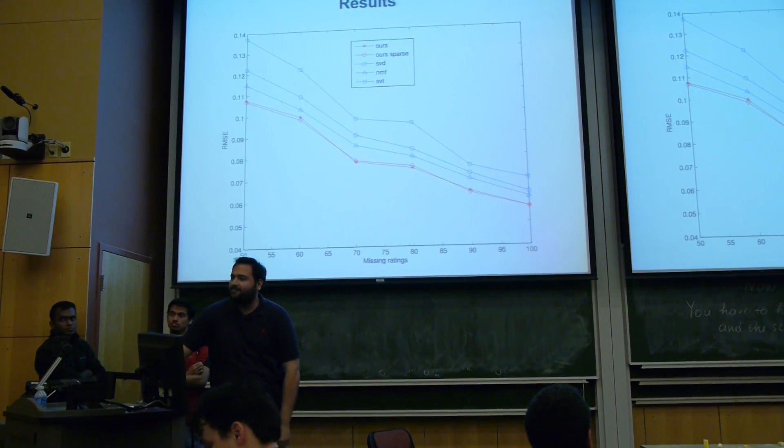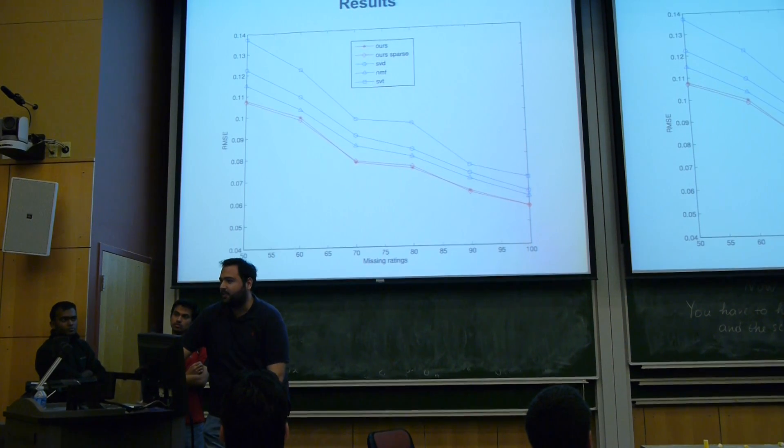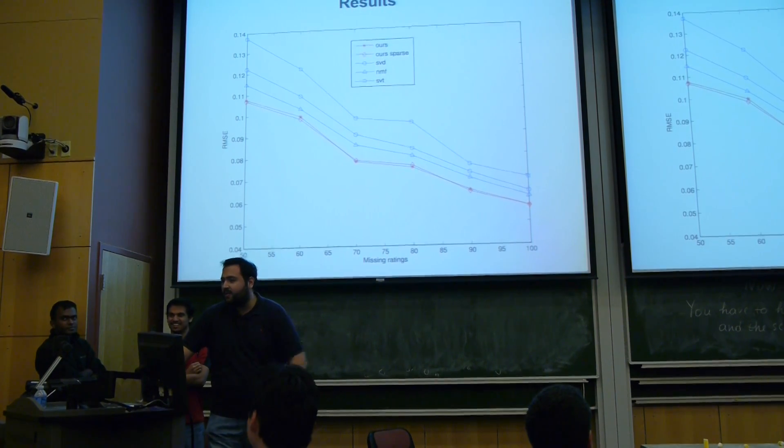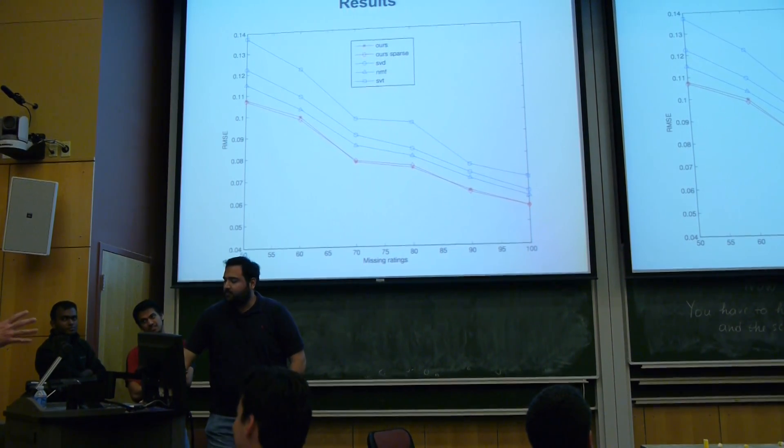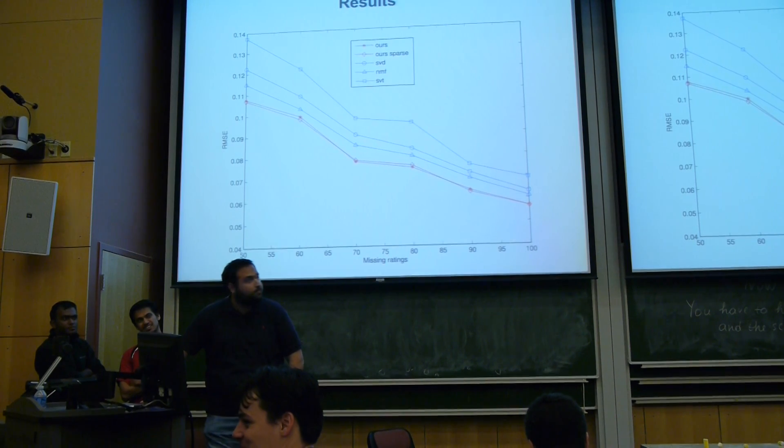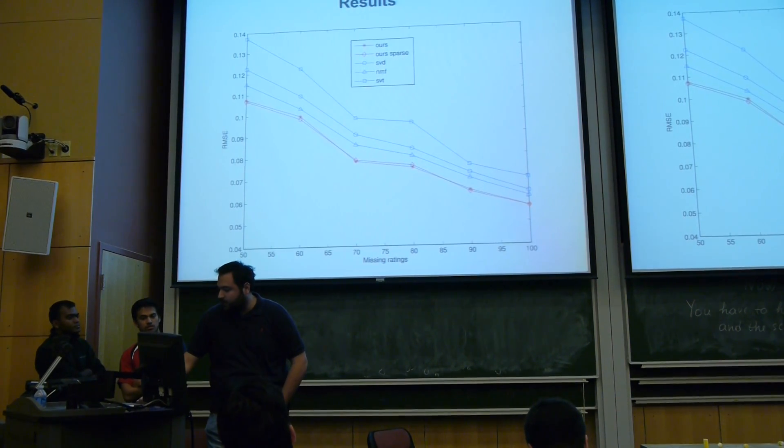So why does the error decrease as you have more missing data? That's a good question. I'm not sure about that. But... I know. This is weird because if you have no data, that should give you the basic results. So something is very strange. I know, I know. But one explanation that you might give is that the more... If you try to find a few parameters, you might not be able to do as better a job as you want to find more. I don't know.